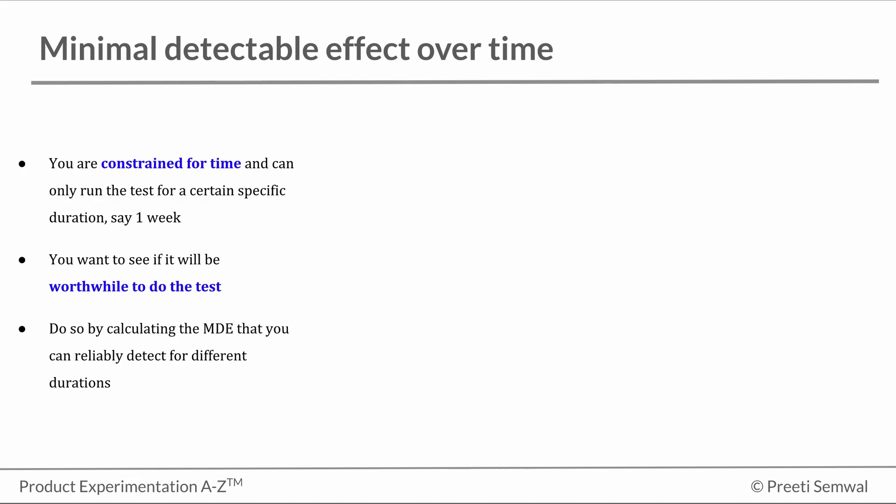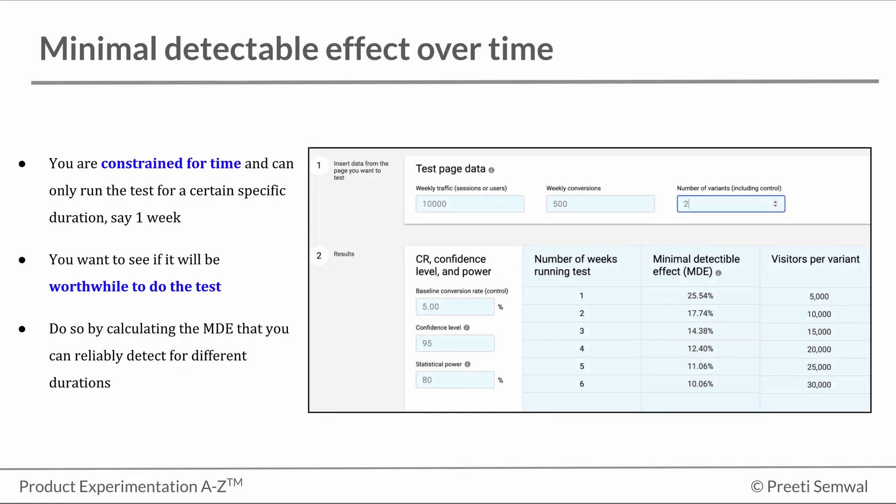For example, let's look at this table here. It shows that if I were to run the experiment for one week, the minimum effect I will be able to reliably detect is 25.54%. That means if the test shows an improvement of lower than this number, I will not be able to reliably detect it if I run the test for only one week.